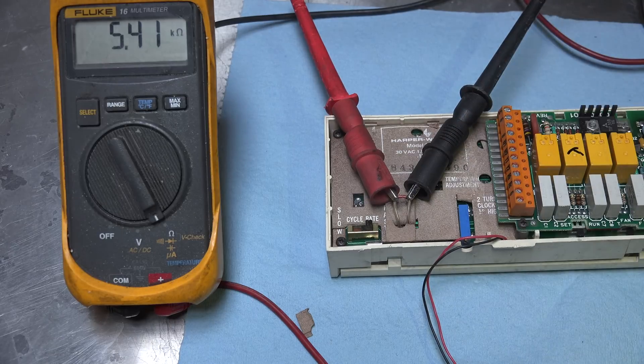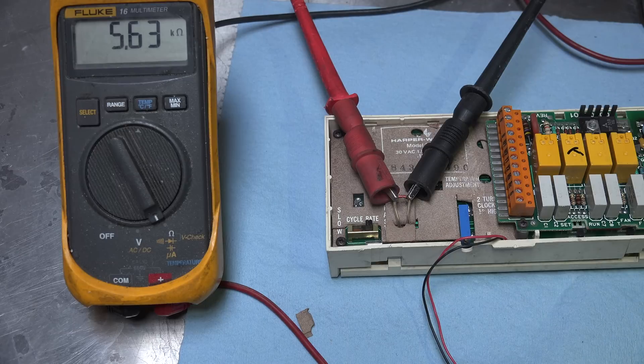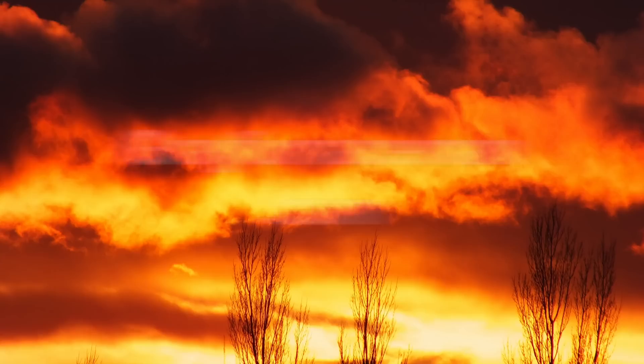So those are all thermistors, and they are the sensing part of the electronic thermostat. They sense the temperature in the structure. That's it on this one.